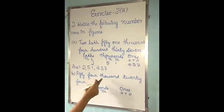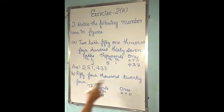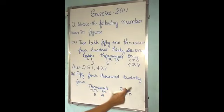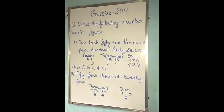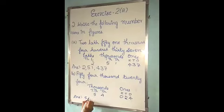Here 54,000: 5 at the ten-thousands place and 4 at the thousands place. Then 20, 4: 2 at the tens place, so I will write 2 in the place of tens. Then 4: 4 at the ones place. In the hundreds place, nothing is there, so we have to write 0 here. So the answer is 54,024.